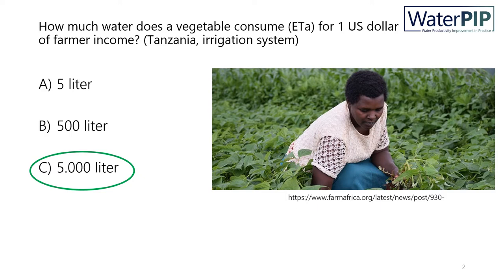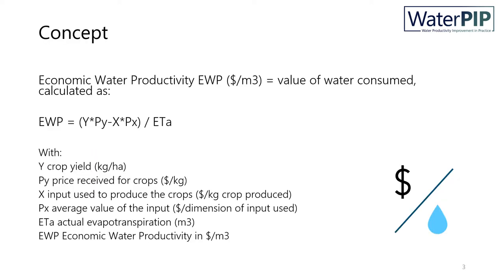Now let us move on to the concept of economic water productivity. It is often defined as the value of water consumed. It is calculated at the farm level by multiplying the beneficial biomass by the market price — y times py — subtracting the financial production costs of all inputs except water — x times px — for instance, the sum of seed, fertilizer, and labor costs, and dividing the figure by the volume of consumed water, i.e., evapotranspiration.